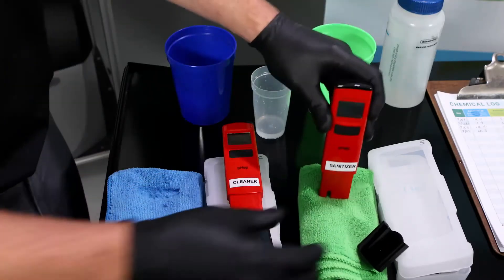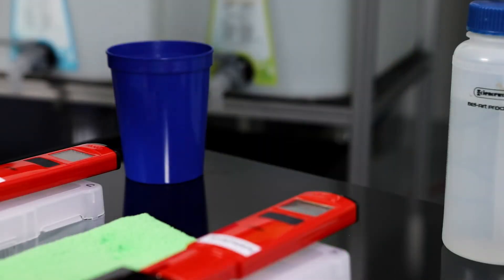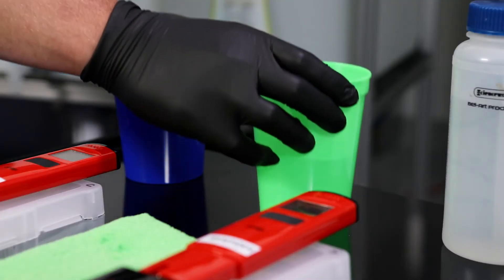These meters are ready for use in their solutions. Now fill one cup with Pathoclean and another cup with Pathosanide. Each cup should have enough fluid in it to cover the bottom of the pH probe.